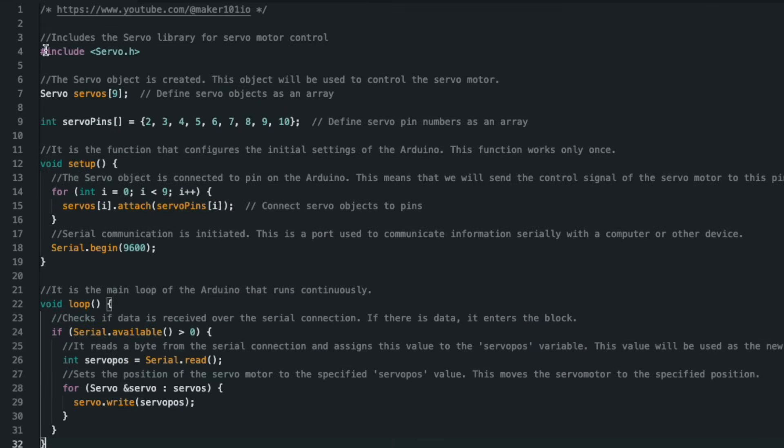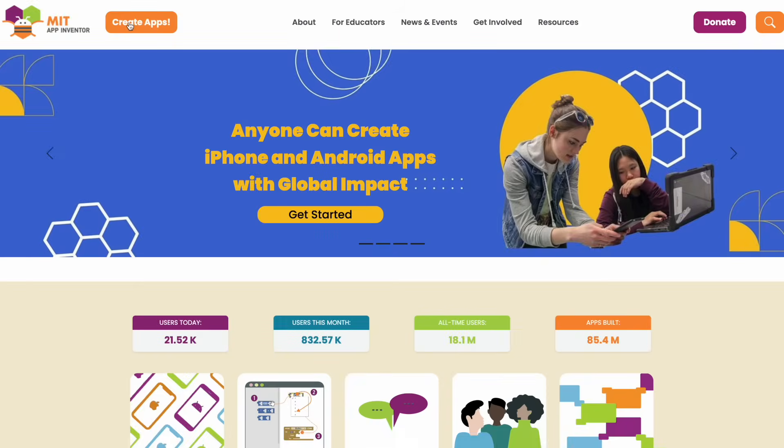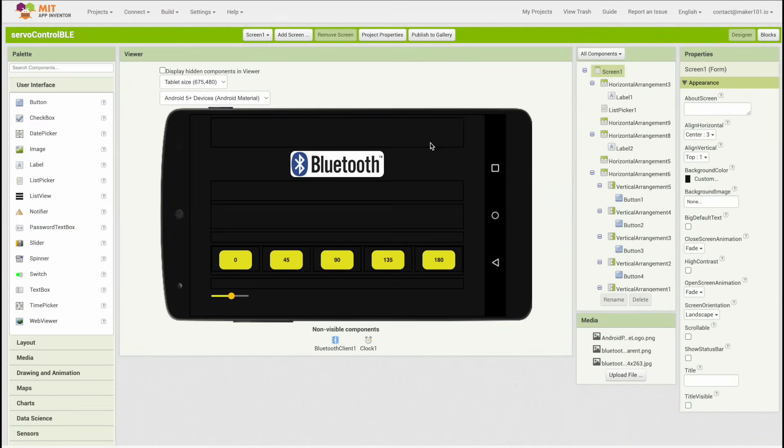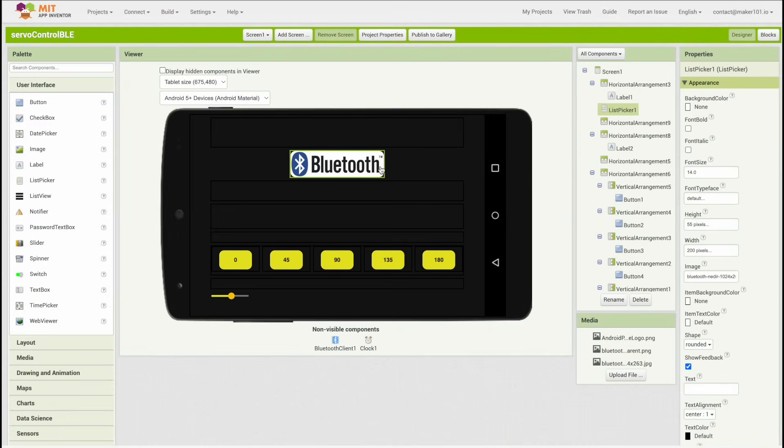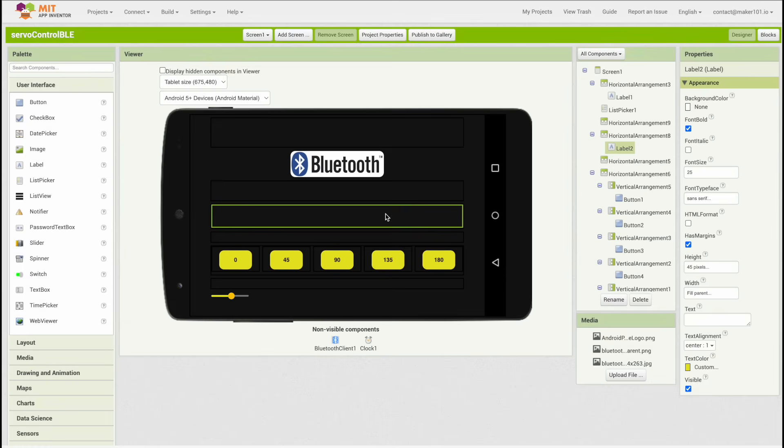When you take a look at the shared code, you will notice that it contains basic Bluetooth communication. In short, it reads the position values received via Bluetooth and moves the servo motor according to these values. Of course, an application is needed to send data via Bluetooth. In this project, App Inventor Platform was preferred to create a free and simple application instead of using a ready-made application.